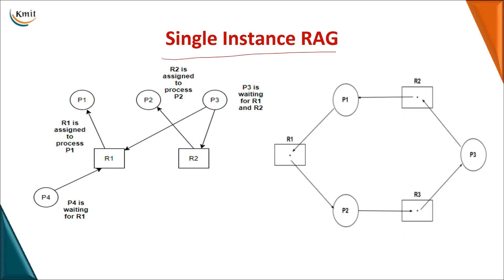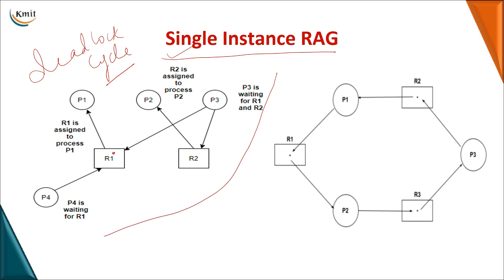Now we look at the resource allocation graph to determine whether a deadlock exists. After constructing the graph, if there is a cycle, there is a deadlock; if no cycle, there is no deadlock. For single instance resources, the first example graph has no cycle, so there is no deadlock.